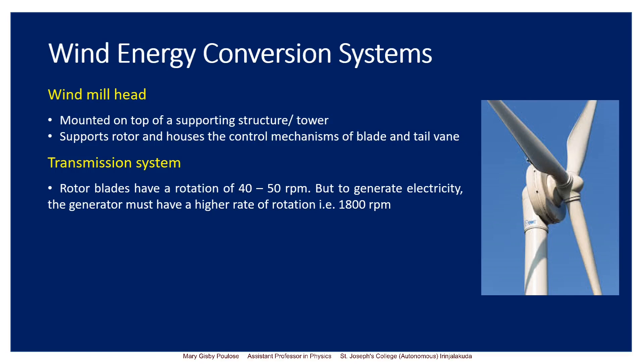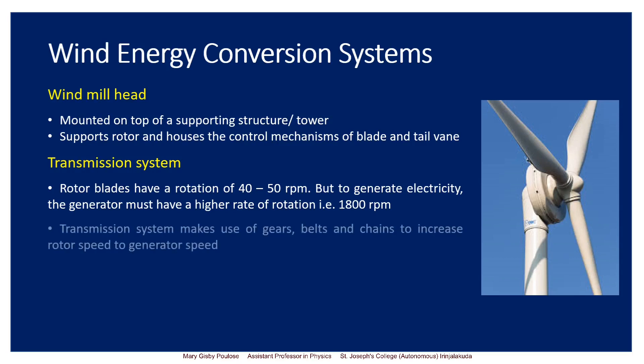The transmission system will increase the generator speed. It makes use of gears, belts and chains to increase the rotor speed to the required generator speed.